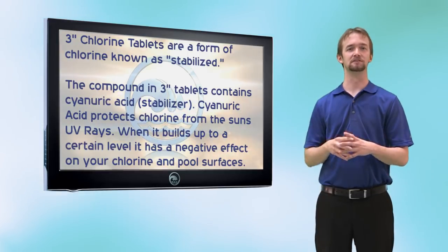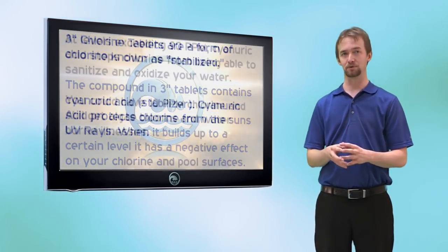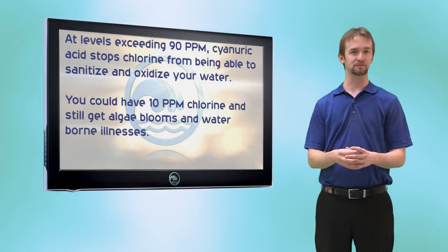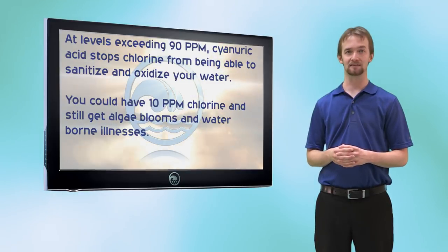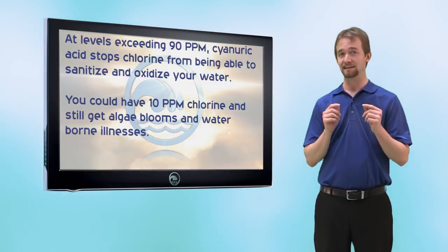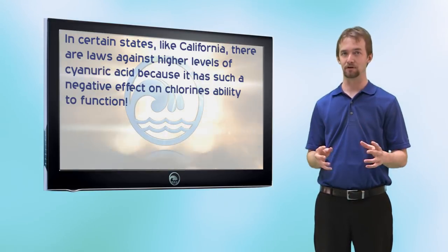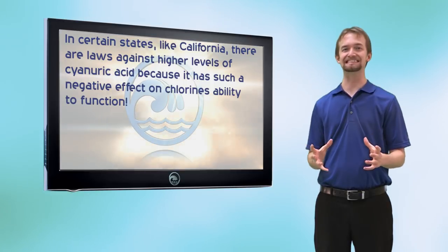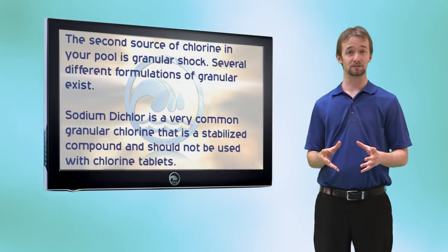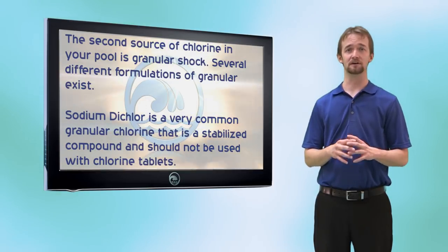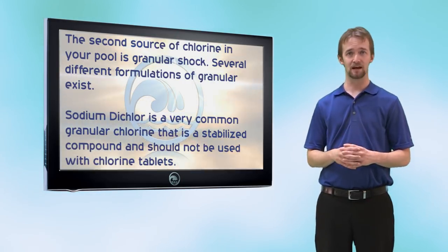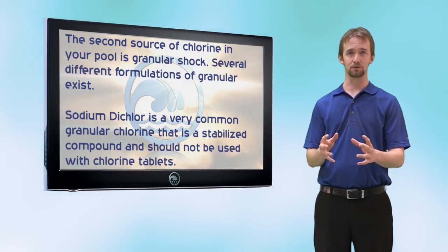However, if you use too many tablets, you'll add too much cyanuric acid to your pool, which has a detrimental effect on the sanitizing power of your chlorine. When cyanuric acid exceeds 90 ppm, chlorine ceases to be able to sanitize — it won't properly kill algae or remove bacteria and germs. In some states it's illegal to have cyanuric acid above 100 ppm. There are several forms of granular chlorine. Sodium dichlor is a stabilized granular chlorine — if you're using chlorine tablets, avoid sodium dichlor at all costs or you will over-stabilize your pool. Do not use sodium dichlor in a chlorine tablet pool.